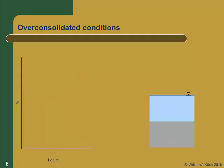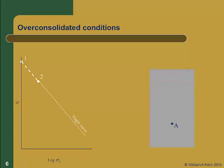We will now look at a second scenario for an over consolidated soil. We start the problem the same way with point A just below the ocean floor, starting at a very low effective stress shown by point 1. Sedimentation occurs and the soil is loaded along the virgin curve from point 1 to point 2. Additional soil deposition occurs and the soil continues to consolidate along the virgin curve from point 2 to point 3. Then a change in geologic history occurs: erosion reduces the height of soil over point A, and the soil unloads along the rebound curve from point 3 to point 4 as effective stress decreases.